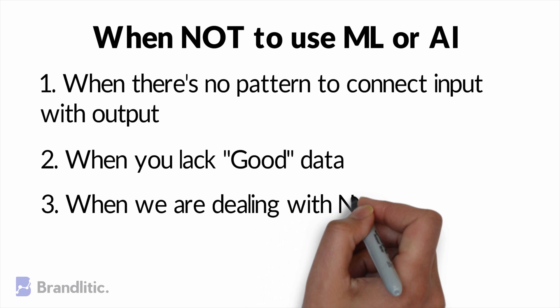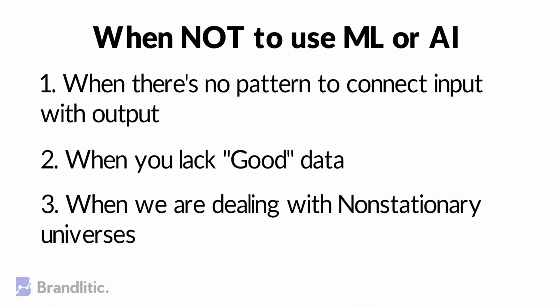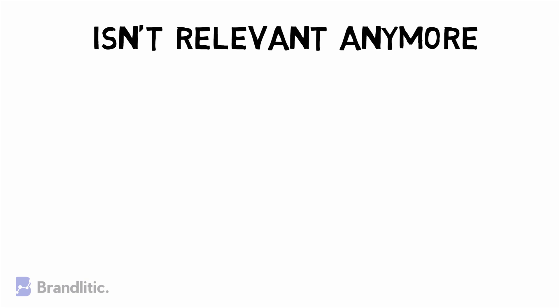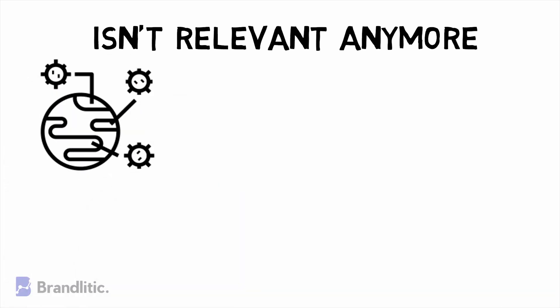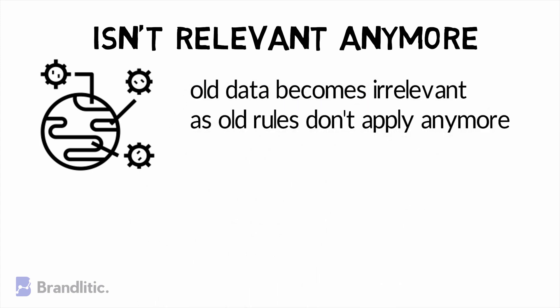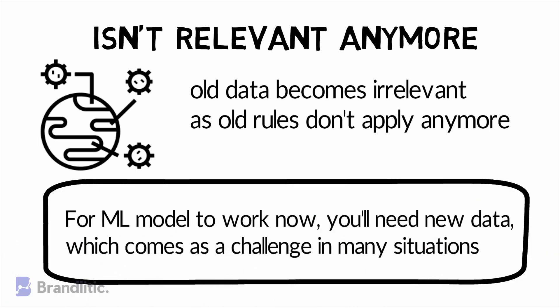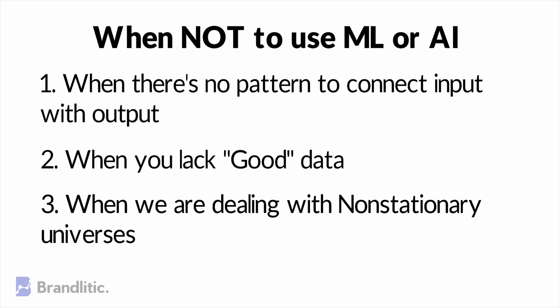3. When we are dealing with non-stationary universes. This translates to a situation when all the data you have isn't relevant anymore — perhaps because a pandemic like COVID-19 changed the rules. It won't matter how good your information is if it's all irrelevant now. If you want to build a machine learning model, you need to prepare data as per the new rules, because if your past data doesn't apply to a non-stationary future, you are not allowed to use yesterday to predict tomorrow.